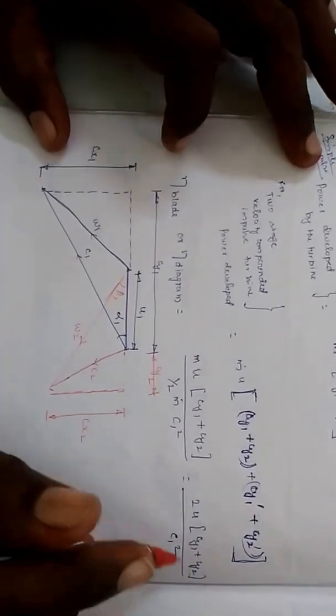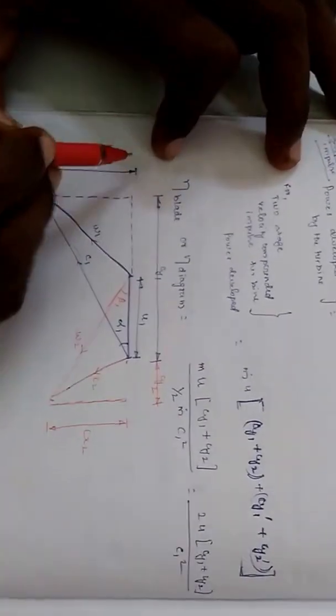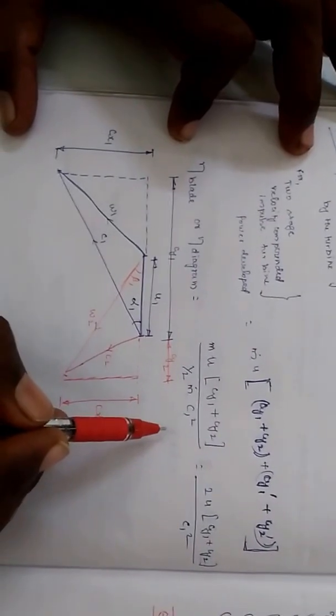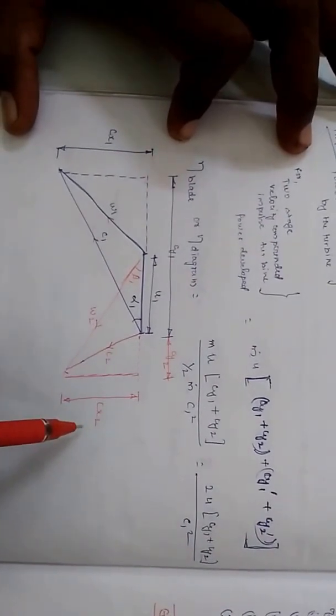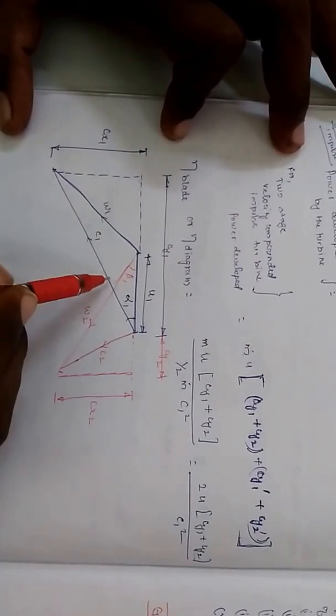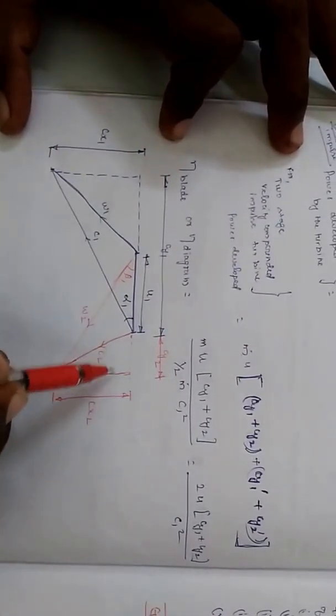To solve this problem, we are going to follow the geometrical method. In the geometrical method, we are going to construct both the inlet and the outlet velocity triangles together.